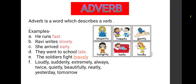Second example: Ravi writes slowly. Writes is a verb. How the work is going here? Slowly. So slowly is an adverb because it is describing about a verb. Next example: she arrived early. Arrived is a verb. When she arrived? Early. Early will become an adverb because it is describing about a verb.